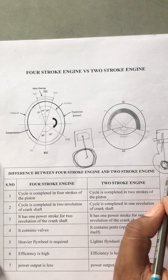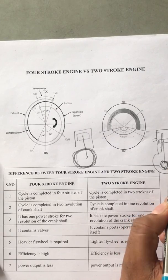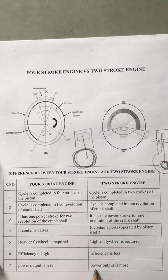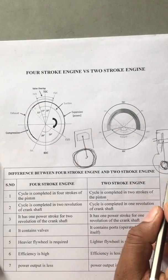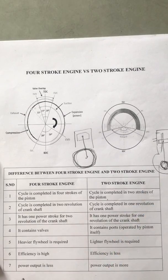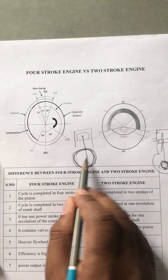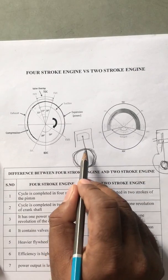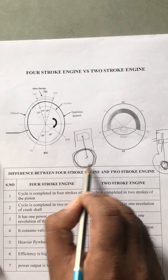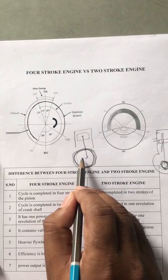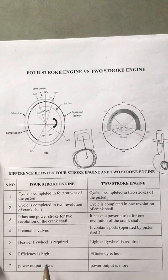So the power is double in the 2-stroke engine — more power is obtained. Power output is more; in fact, it is double. In the 4-stroke engine, power output is less — approximately half of the power developed by the 2-stroke engine.